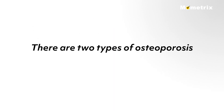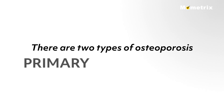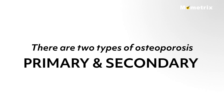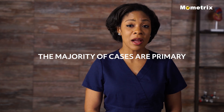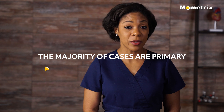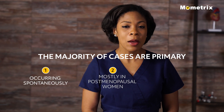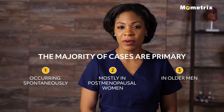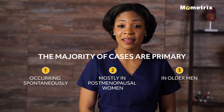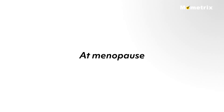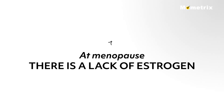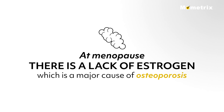There are two types of osteoporosis: primary and secondary. The majority of cases are primary, occurring spontaneously, mostly in postmenopausal women and in older men. At menopause, there is a lack of estrogen, which is a major cause of osteoporosis.